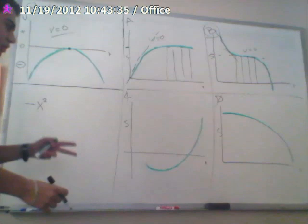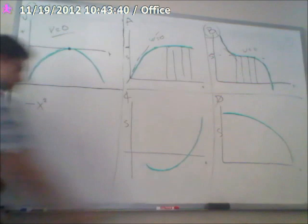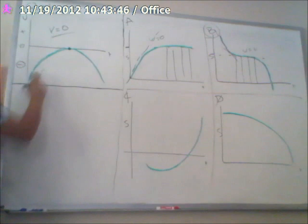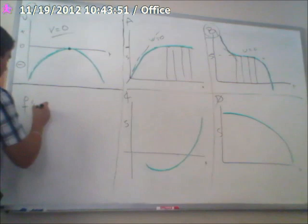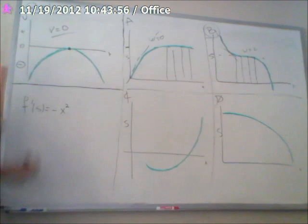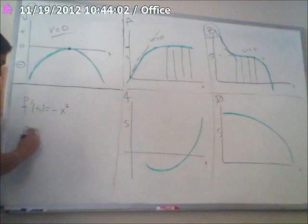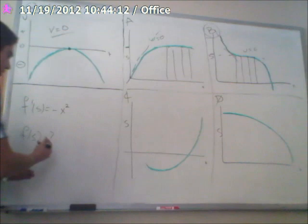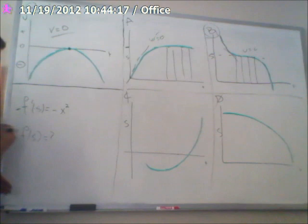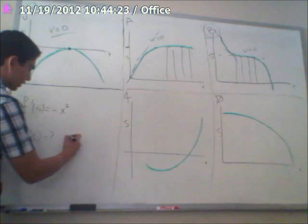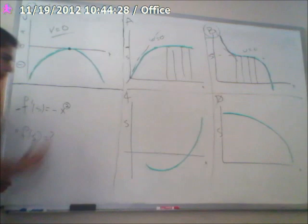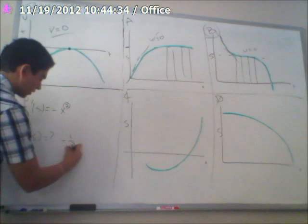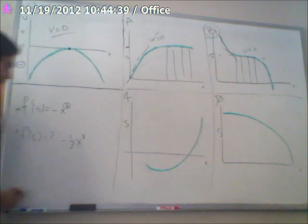The second way we can approach this problem is looking at the function. So the velocity function is written this way: f prime of x equals negative x squared. Well, we have f prime. We want f, the function of x. We can use what is called the antiderivative, which is basically getting the function from the prime function. To do this, you add 1 to the exponent and divide by that. So it will be negative one third x to the third power.